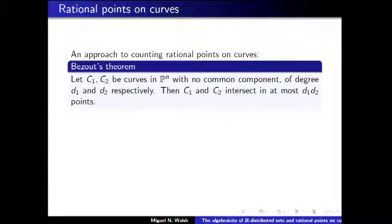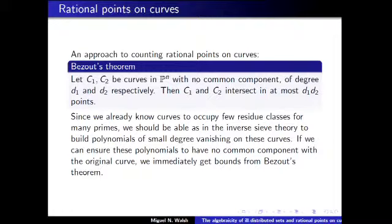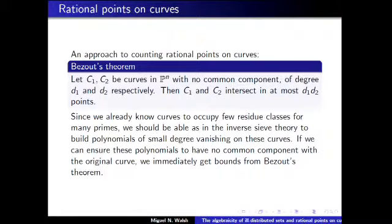It turns out that the ideas of the inverse problem I just mentioned can also be applied to Diophantine geometry problems and mix very well with the determinant method. This is a general approach to counting rational points on curves. Bézout's theorem says that if you have two genuinely different curves, the number of points in which they intersect is at most the product of the degrees of the two curves. We already know that curves and varieties in general are badly distributed in residue classes, so by what I said before, this implies that we can build polynomials vanishing on their points. These methods are quite flexible, so we can build polynomials really different from the original polynomial defining the curve, giving a very natural approach to the question of the number of points on curves.